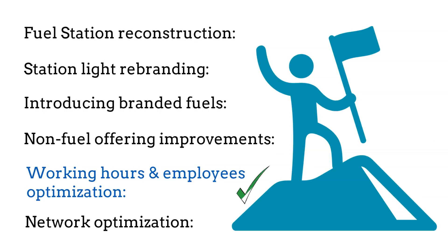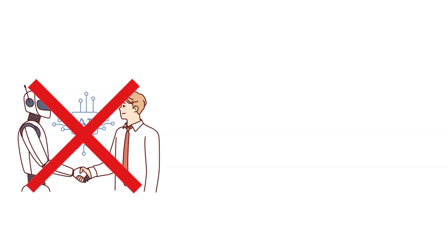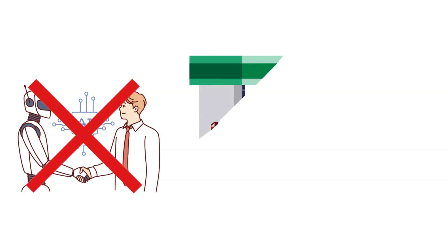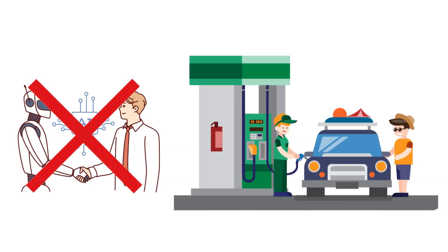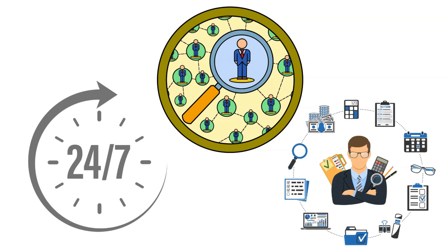Working hours and employee optimization: according to market research, fully automated stations are not interesting for your customers — they want to be served. So to slightly optimize the number of employees, the best you can do is introduce self-serving coffee machines, apps to pay for fuel, and similar to speed up service. Here and there you can also adjust working hours. In total, that will help optimize opex to a certain extent and increase overall network profitability, yet it's not a game changer.